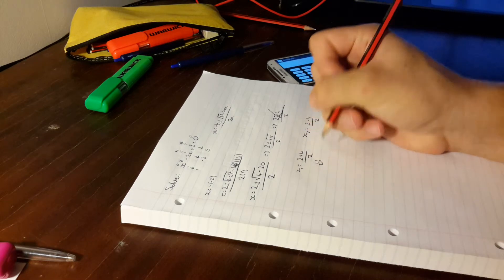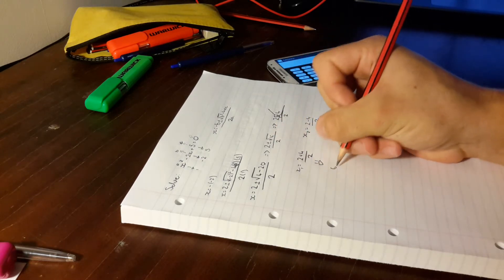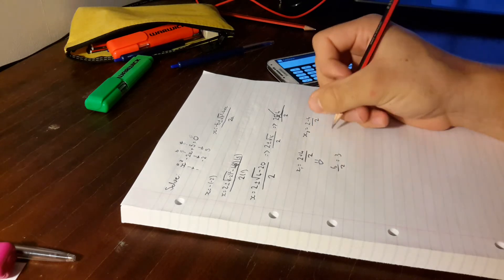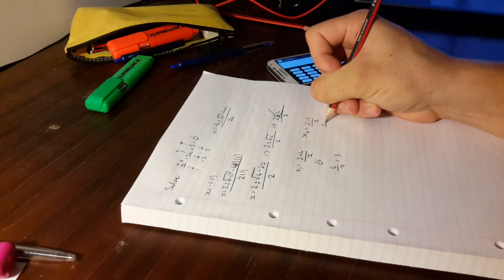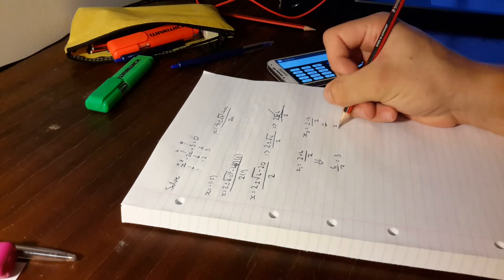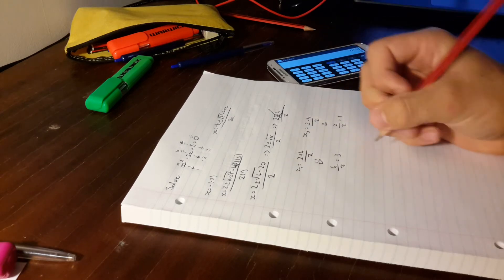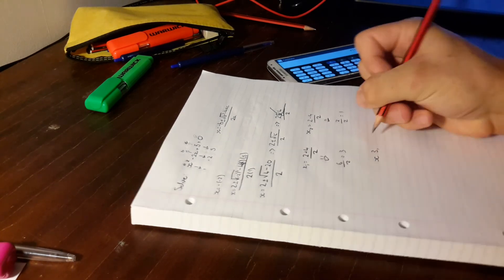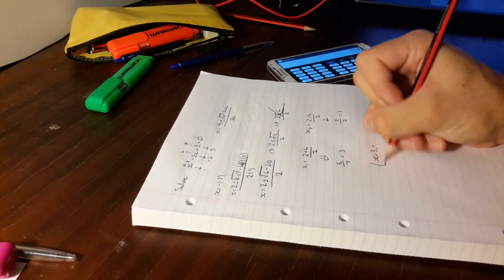So if we take this one down, it'll be 6 over 2, which is 3. And then if you want to take this down, 2 minus 2 equals 2 over 2, which is 1. So your two answers at the end you'll write like this, 3 comma 1. And there's your final answer.